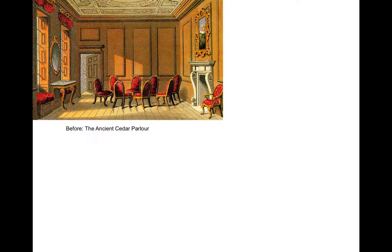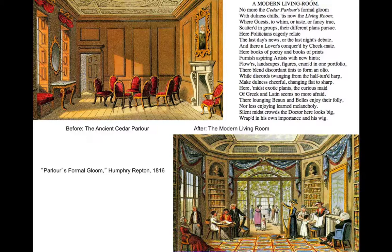In 1816, Repton wrote a paper called Fragments on the Theory and Practice of Landscape Gardening. In two images, he is showing you where architecture and interior design is at 1800 and where it was going to go with this new language of iron and glass. He writes an essay called 'Parlor's Formal Gloom.' Here is a passage: 'No more of the cedar parlor's formal gloom with dullness chills.' There are no people in that first image — he's very clever, contrasting the dull old architecture of the past where he puts no people so as to make it seem as bleak as possible, and the coming future where the people are having a wonderful time.